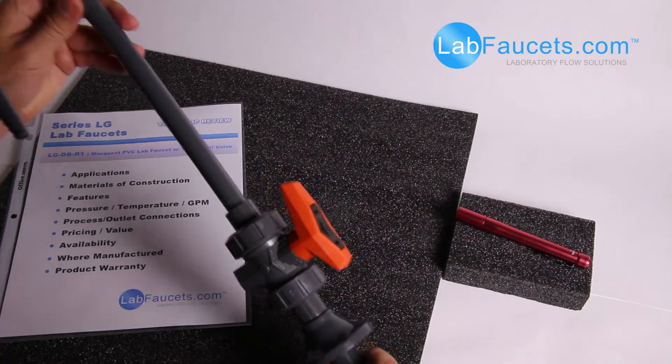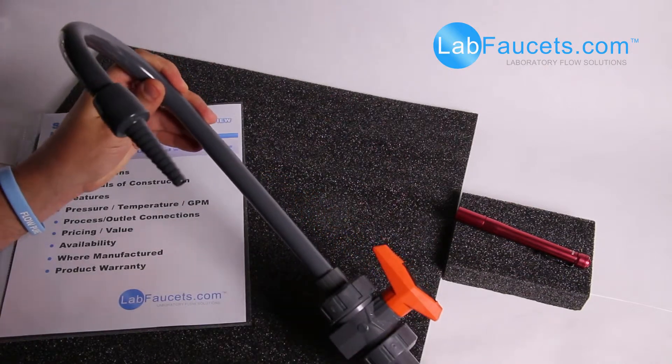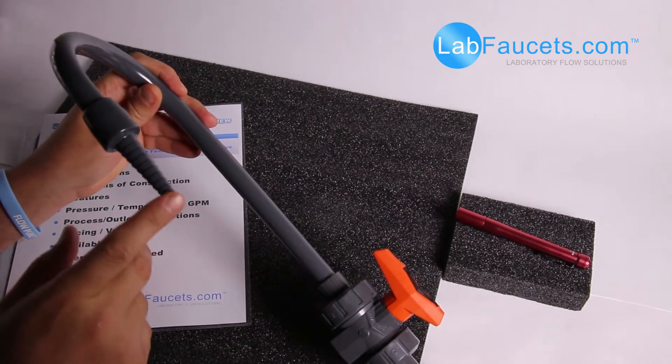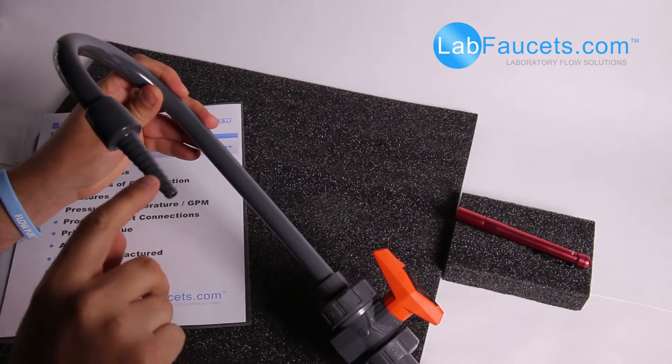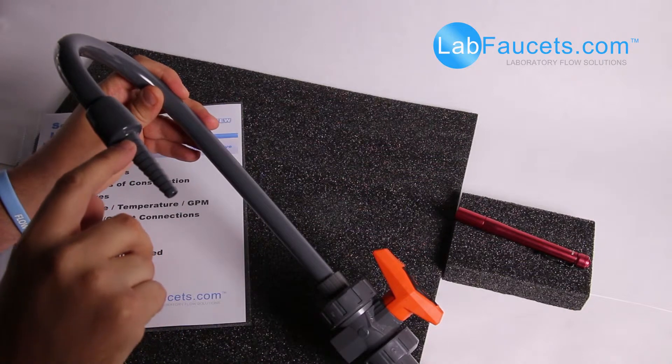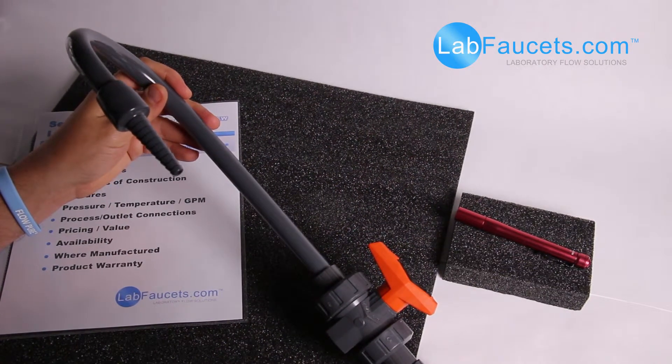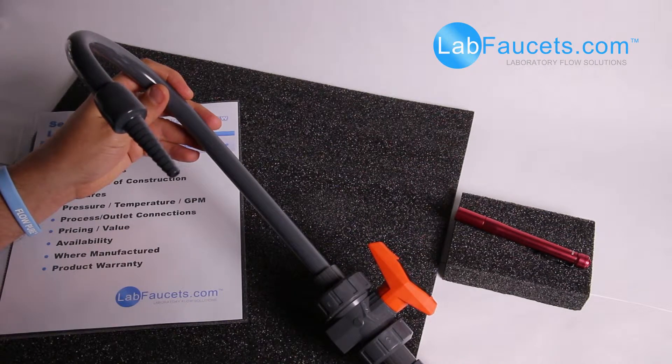The outlet connection on this unit is a serrated barb tip. For this faucet, there are nine to ten serrations, accepting quarter-inch ID to half-inch ID low durometer tubing.